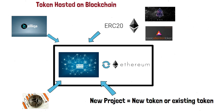Going back one step: gold, our coin analogy, is mined and operated on top of the Earth as its platform. Similarly, Ethereum coin and tokens all run on top of the Ethereum blockchain. The straightforward statement is: if we call something a coin, it means it has its own blockchain. When I say Ethereum coin, it means there is an Ethereum blockchain behind it.